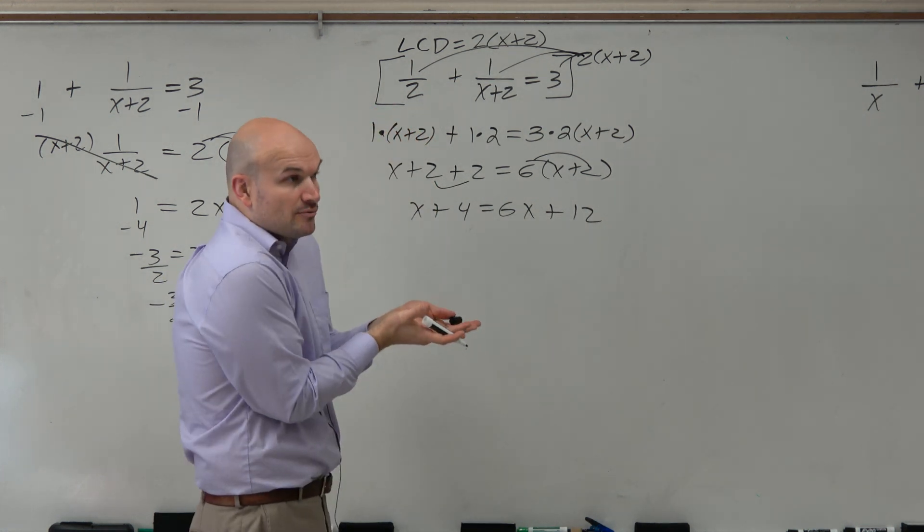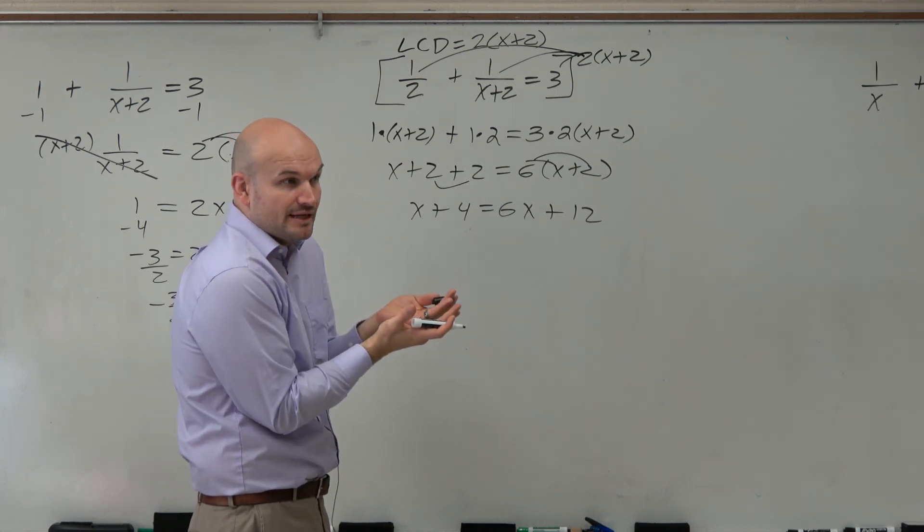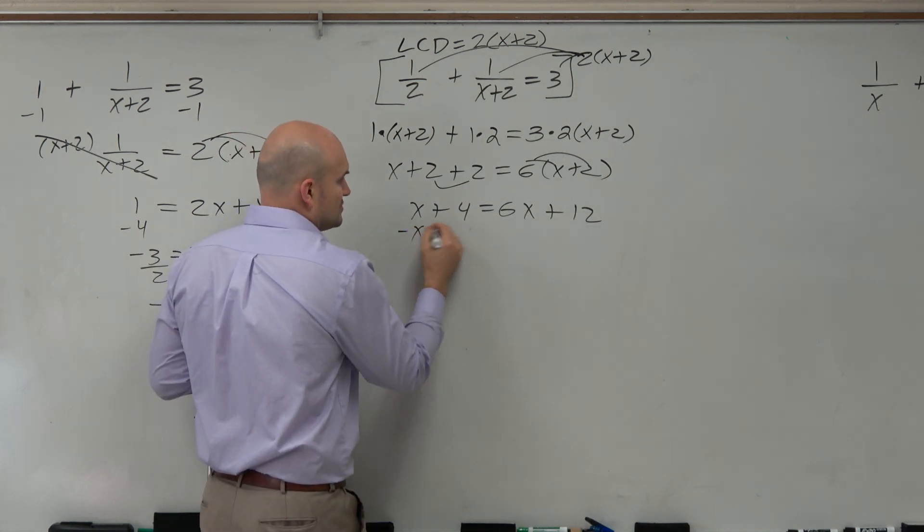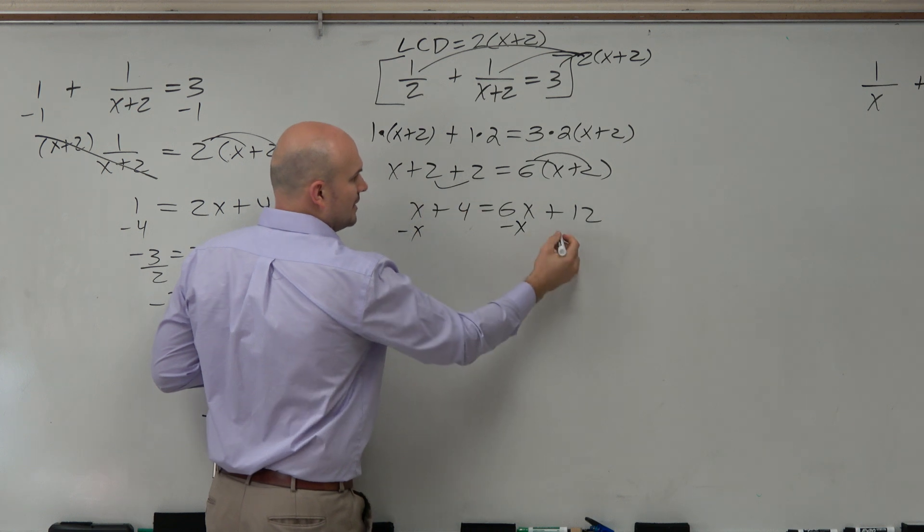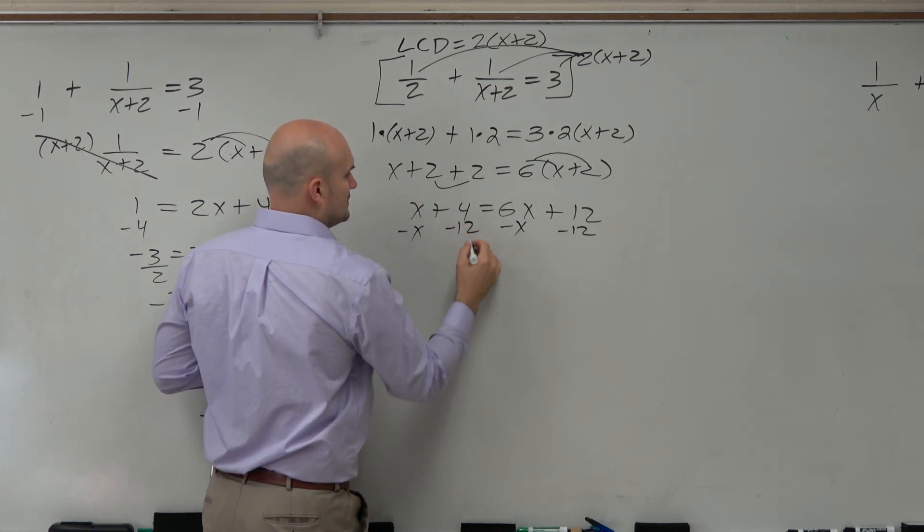Now we have an equation where x is on both sides. So I just subtract x here and subtract the 12. Therefore, it's going to give me negative 8 equals 5x.